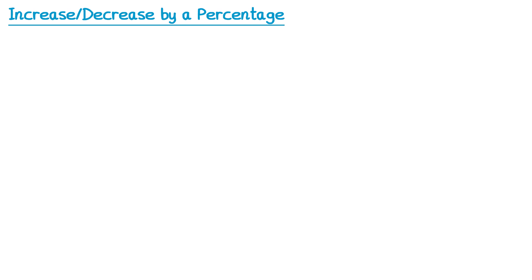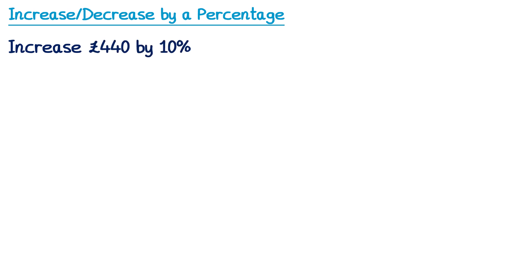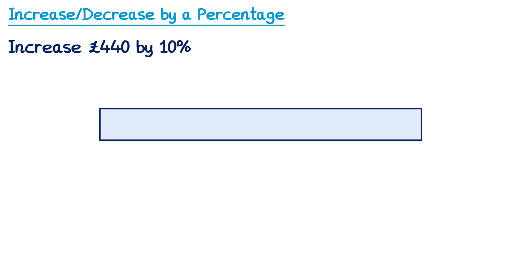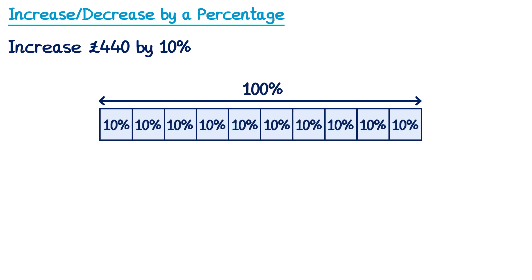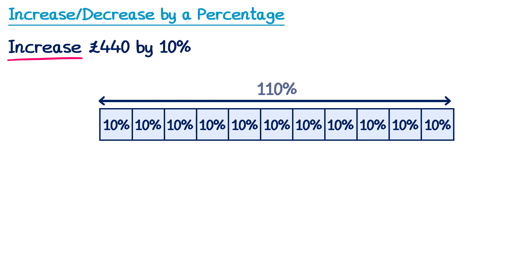We'll start by looking at how we increase. For example, increase £440 by 10%. Imagine this bar here represents 100% of something — all of it. If we split it into 10 equal size pieces, each one would represent 10%. To increase something by 10%, we want an extra 10%, so let's take a copy of one of these 10% pieces and add it on. In total we have 110%.